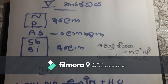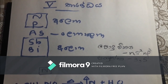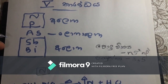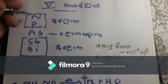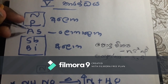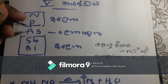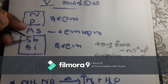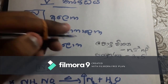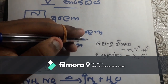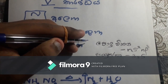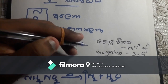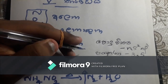Nitrogen, phosphorus, arsenic, antimony, bismuth. Aloha with your arsenic, aloha with your antimony bismuth. The electron configuration is ns2 np3.